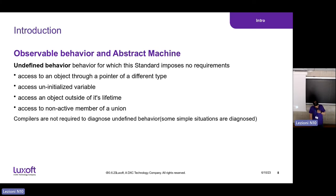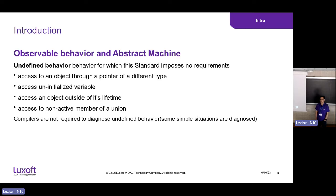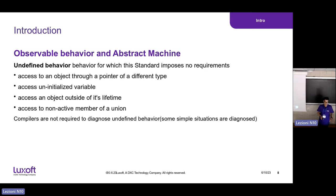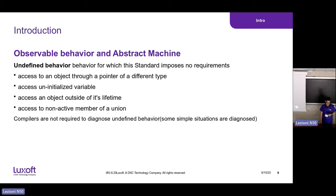The fourth and very important category is undefined behavior — behavior for which the standard imposes no requirement. If you go beyond what the standard defines for creating an object, it's not documented, and you are on your own. Examples of undefined behavior include: accessing an object through a pointer of a different type, accessing an uninitialized variable, accessing an object outside of its lifetime, and accessing a non-active member of a union. All of these are considered undefined behavior — the specification did not cover them.